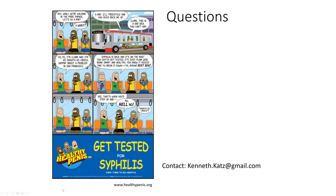Question: Can herpes type 1 be genital and can herpes type 2 be oral? The answer is yes and yes. Type 1 is usually oral and type 2 is usually genital, but they can go in other areas. In my experience, a first HSV type 1 eruption in the genital area can be more severe than a type 2 eruption in the genital area.